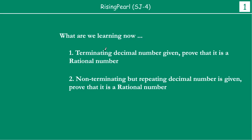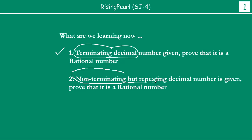If you have a terminating decimal, you will find out how to prove it is a rational number. And then you are also going to find out, if you have a non-terminating but repeating decimal number, how to prove that it is a rational number as well.